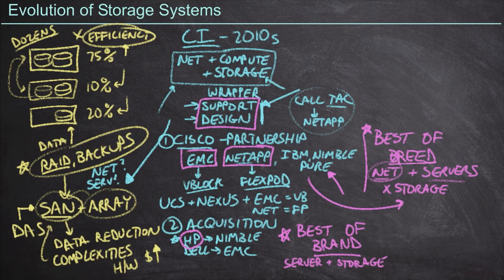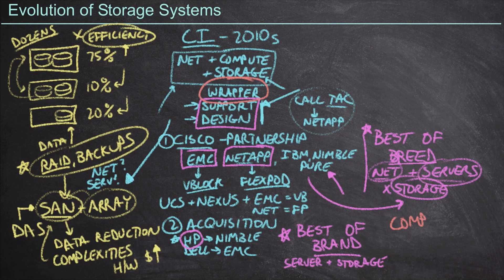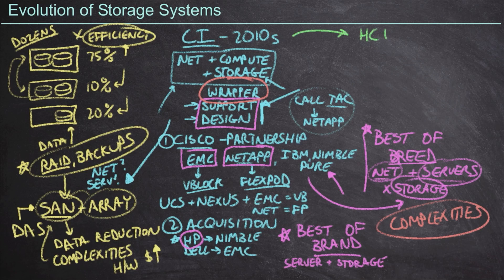The biggest flaw to the converged infrastructure solution is that it's not a technical solution — it is simply a wrapper: a support wrapper, a white paper wrapper. The complexities that exist by managing disparate systems continue to exist with a converged infrastructure solution. Yes, it's helpful to call TAC and get support on your NetApp array, but it doesn't eliminate the need to support the entire infrastructure. This is what led to yet another evolution in the industry, which is what we call hyper-converged infrastructure.